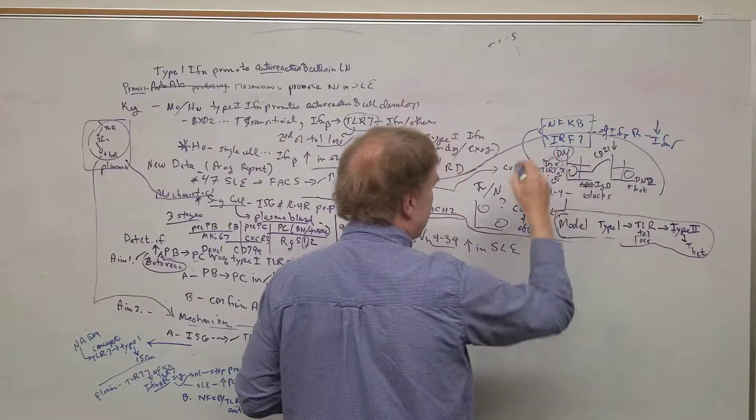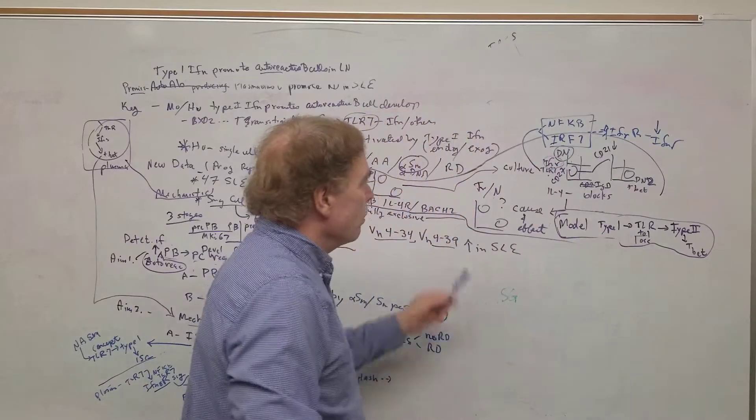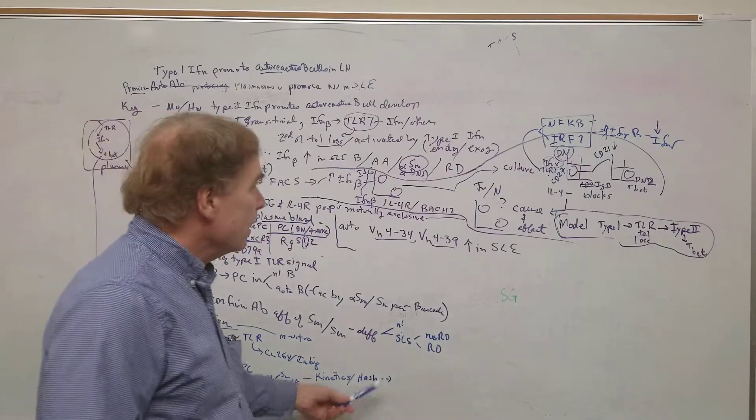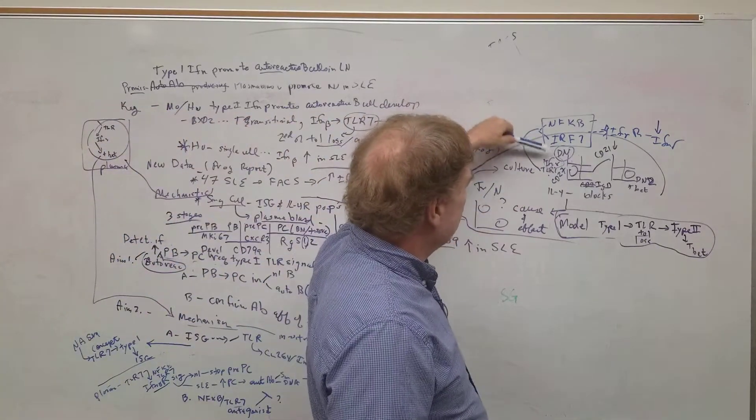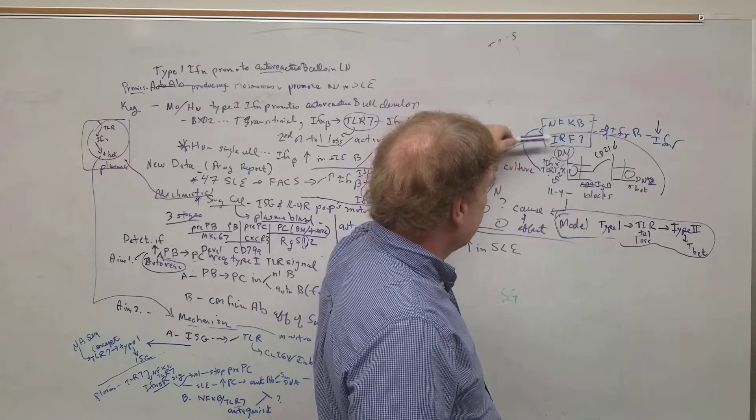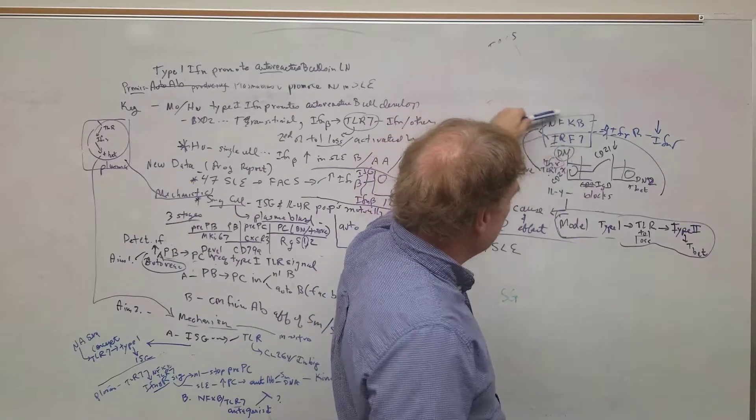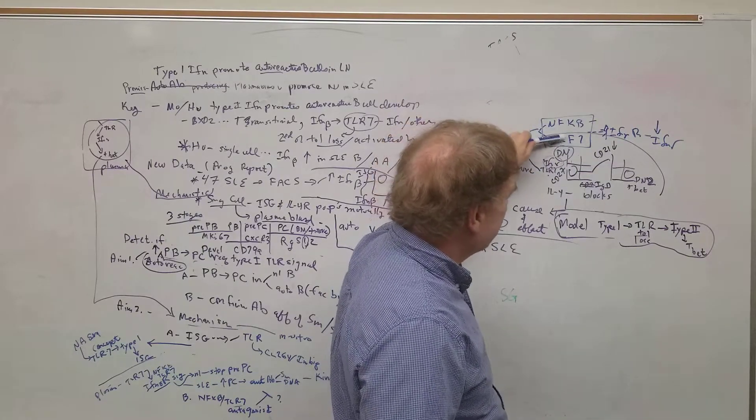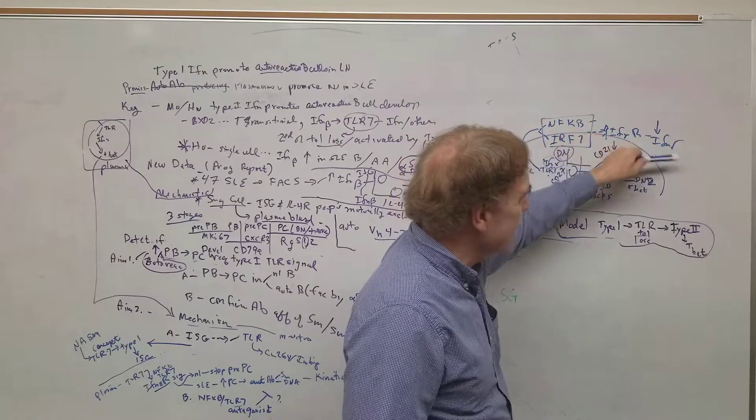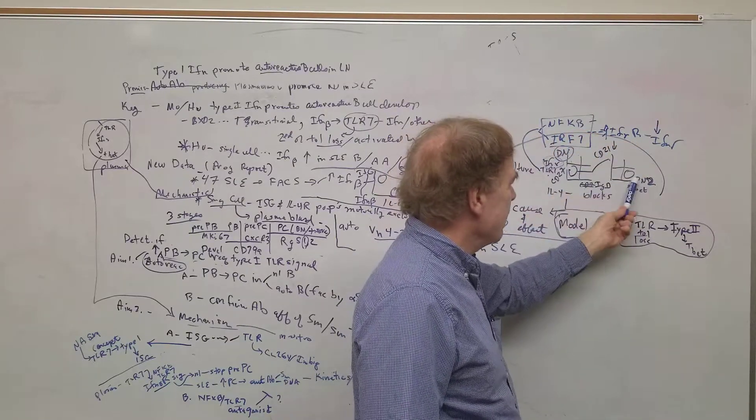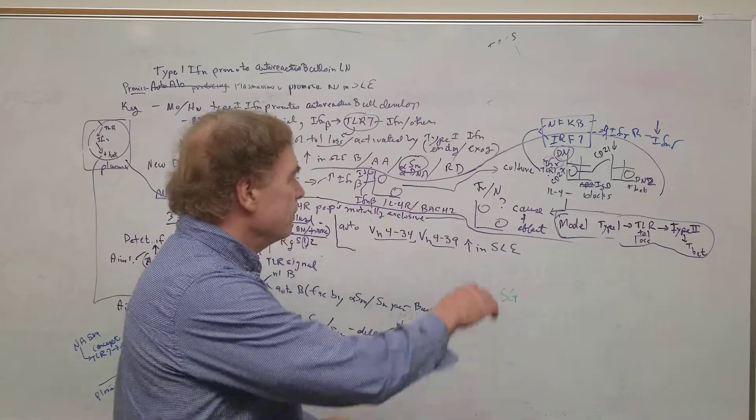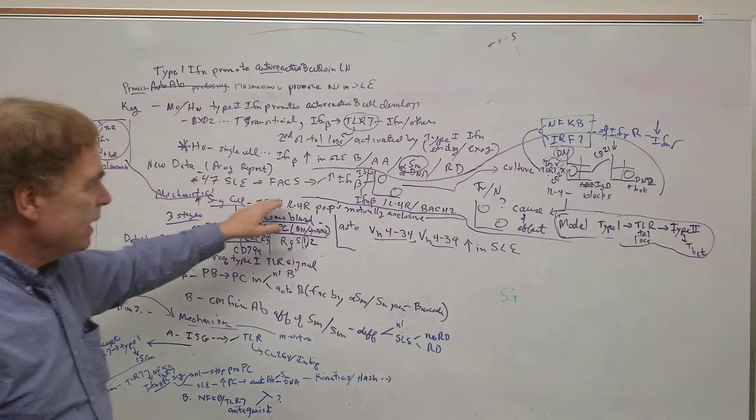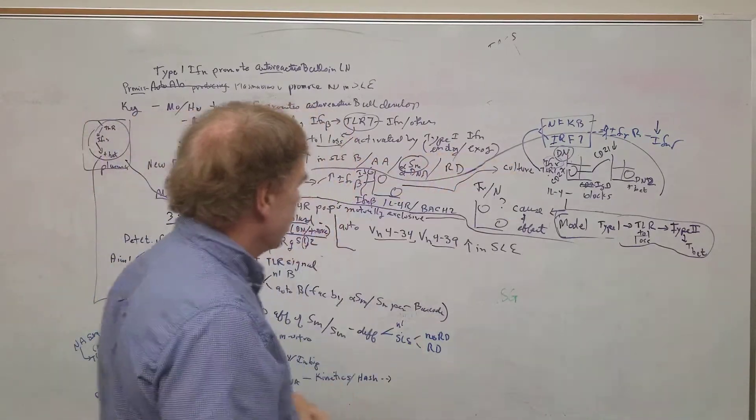The new data to go into the progress report, we haven't published yet, but we've tried, is 47 SLE patients. And this is important because nobody wants to see two or four or something like that. That's why we're doing the experimental model. 47 SLE subjects, we did the flow cytometry in all of them.